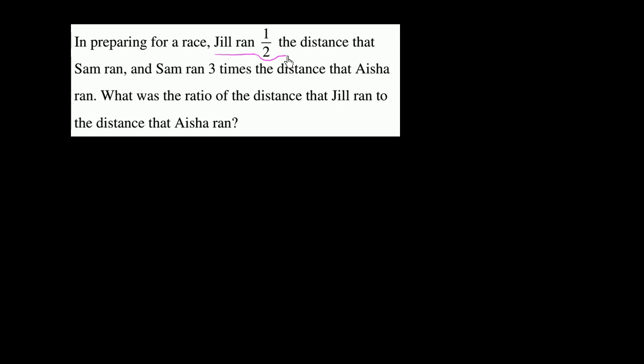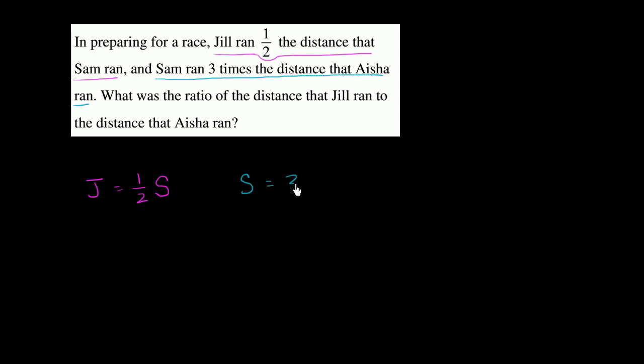In preparing for a race, Jill ran half the distance that Sam ran. So let me write that down. Let's say J is the distance Jill ran — it is equal to half the distance. We'll say S is the distance that Sam ran. And Sam ran three times the distance that Aisha ran, so S equals three times A, where A is the distance that Aisha ran.